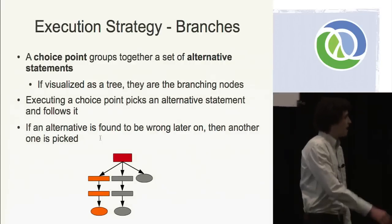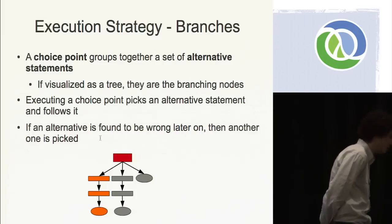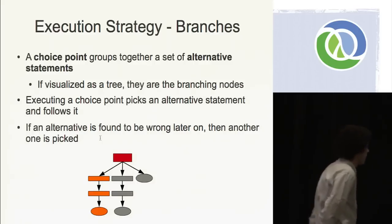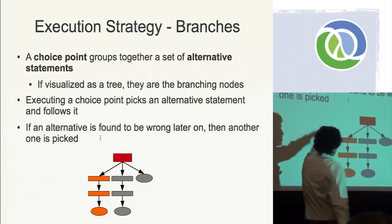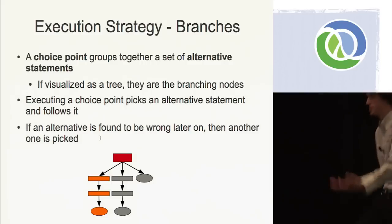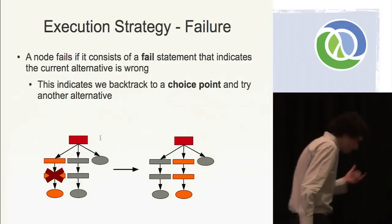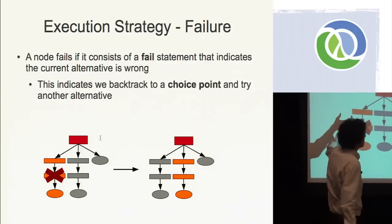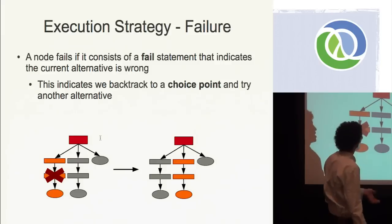The first thing to understand with the execution strategy of a logic language is the concept of a branch or choice point. A choice point groups together a set of alternative statements, and if visualized as a tree, they are the branching nodes — the red root node there is basically a branch. It's like a conditional in a conventional language, but we'll see how it differs. If an alternative is found to be wrong later on, then another one is picked. Each node is a separate statement — you can think of it as a relation. If we come across a relation that represents a failure statement, then this whole branch can be considered wrong or false.